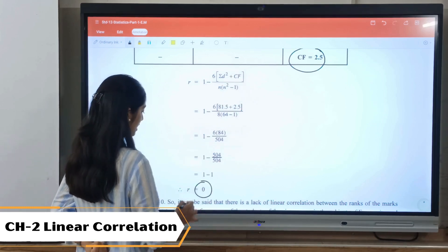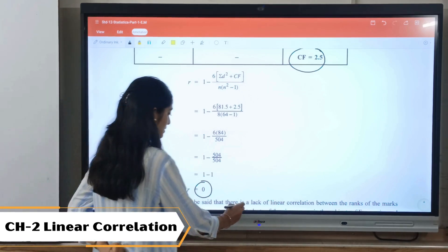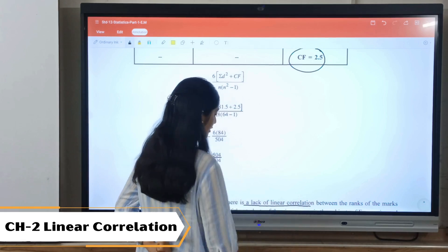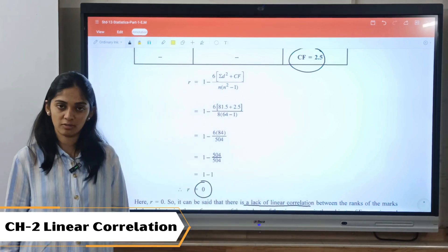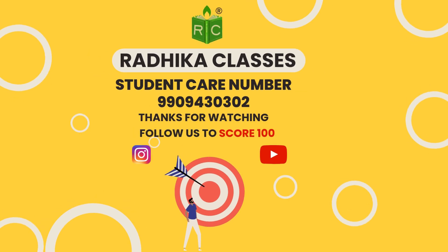Using the formula, we got r as zero. Now, r is zero - that means we can say that there is a lack of linear correlation between the given variables.